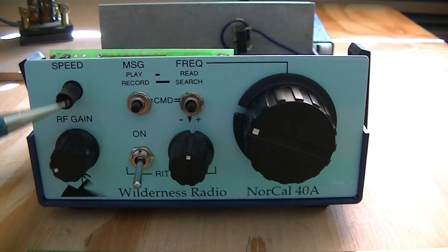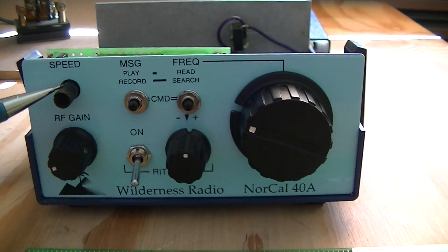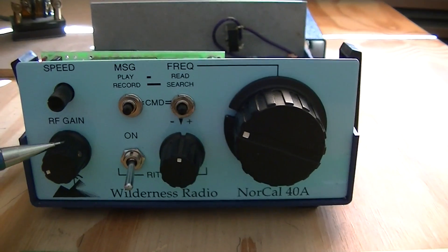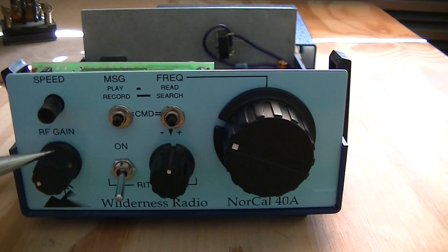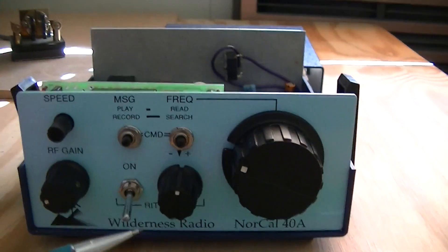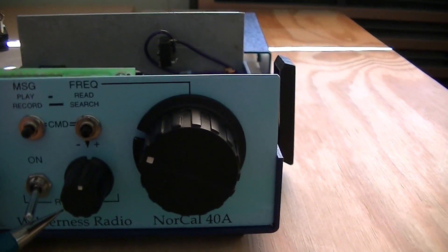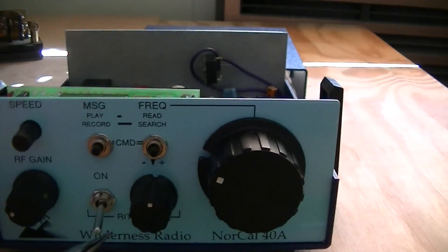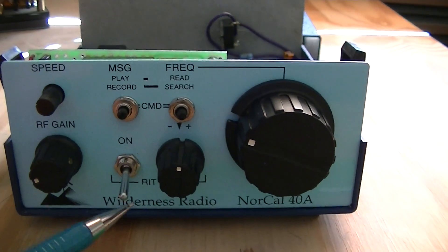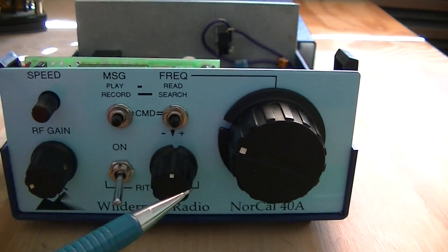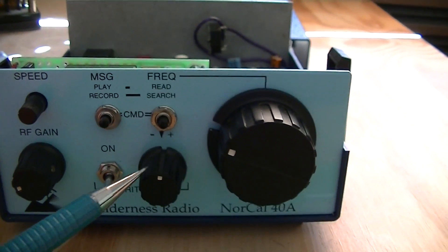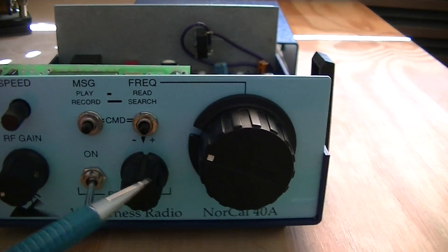Looking at the front, we have the keyer speed. We have the RF gain controlling the volume. This radio comes with RIT, Receive Incremental Tuning, which allows you to flip that up and then, without changing the transmit frequency, tune either side of the receive frequency.